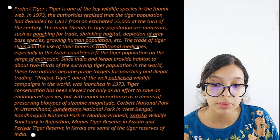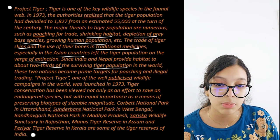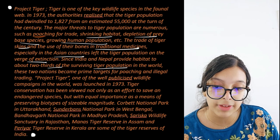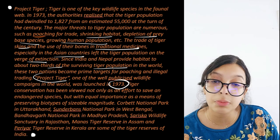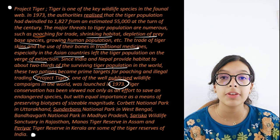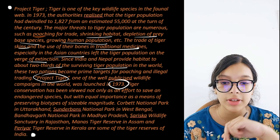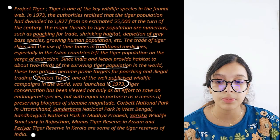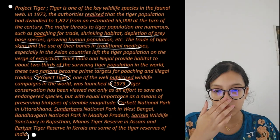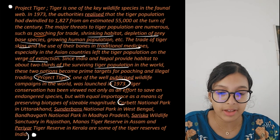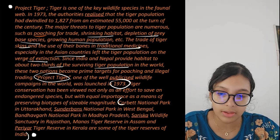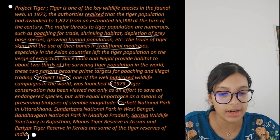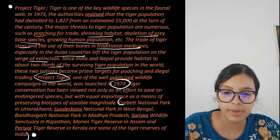Since India and Nepal provide habitat to about two-thirds of the surviving tiger population of the world, these two nations became prime targets for poaching and illegal trading. Project Tiger, one of the well-publicized wildlife campaigns in the world, was launched in 1973. Tiger conservation has been viewed not only as saving an endangered species but also as preserving biotypes of sizeable magnitude. Tiger reserves include Corbett National Park in Uttarakhand, Sundarbans National Park in West Bengal, Bandhavgarh National Park in Madhya Pradesh, Sariska in Rajasthan, Manas Tiger Reserve in Assam, and Periyar Tiger Reserve in Kerala.